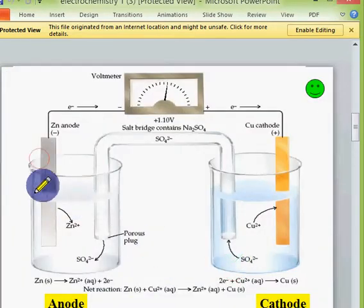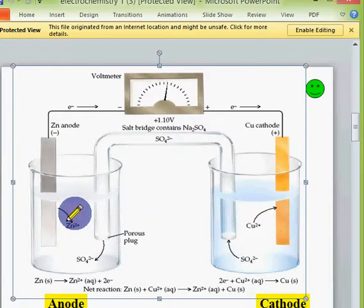This is the construction of galvanic cell. In galvanic cell, take two beakers. This is one beaker and this is another beaker. In one beaker, take zinc in zinc sulfate solution, copper in copper sulfate solution. Then connect two metal rods with external wire with voltmeter or ammeter. This is useful to measure the current. Then to complete the circuit, connect two beakers with salt bridge.